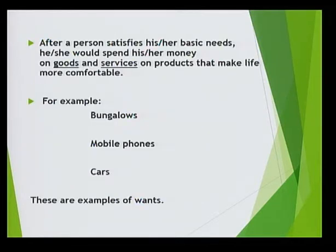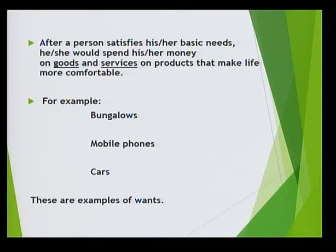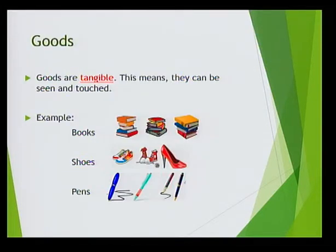After satisfying their basic needs, a person should spend money on goods and services — on products that make life easier and more comfortable. Examples include bungalows, mobile phones and cars. Goods are tangible, meaning they can be seen or touched. Examples are books, shoes and pens.